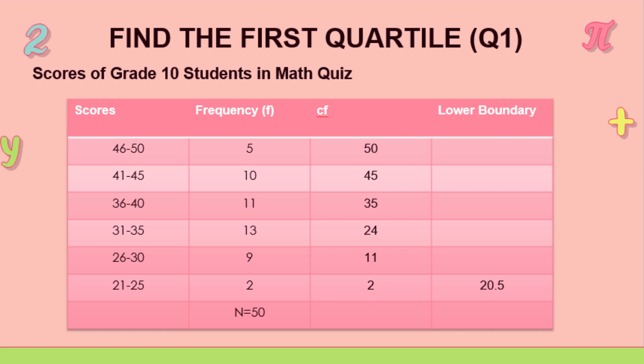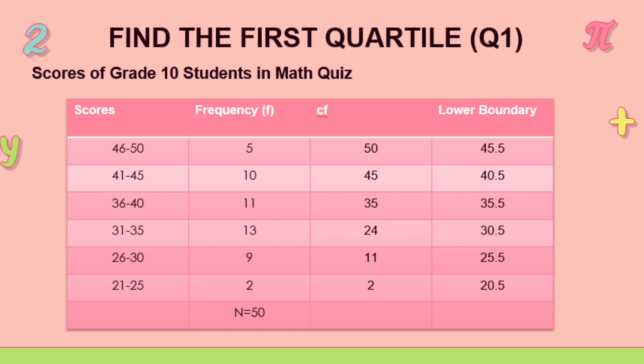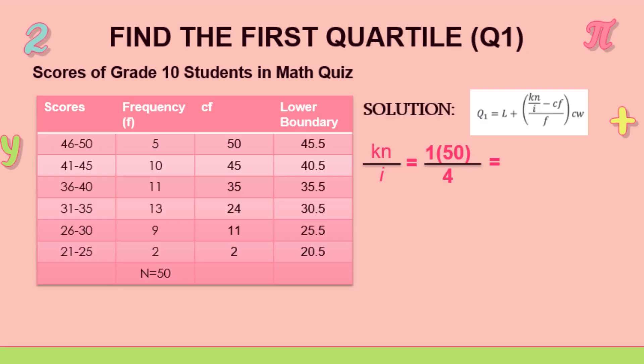And then we're going to get the lower boundary. How do we get that? We're just going to subtract 0.5. For example, 21, so here 21 minus 0.5, so it will become 20.5. I'm just going to do it with the rest there. And now we're going to solve it. That's our solution. So we have 1 times 50 over 4.